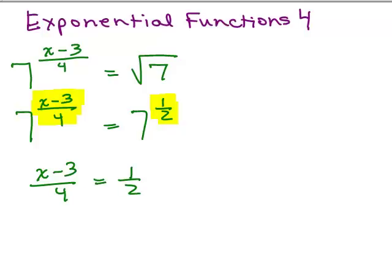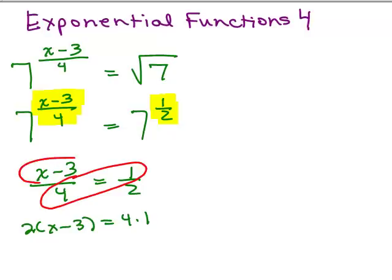One way is you could do cross multiplication. So you could do x minus 3 times 2. So in other words, 2 times x minus 3 is equal to 4 times 1. Remember that only works if you have an equation. You could say the product of those two numbers is the same as the product of those two numbers. That's one possible method of solving this equation. And so that gives me 2x minus 6 equals 4. 2x is 10.